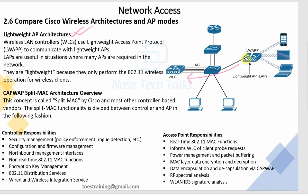Autonomous AP has remote management functionality - you can access it from a remote location using your credentials. With Lightweight AP, local management is possible as well. The key difference is that Lightweight AP is connected through the WLC infrastructure, while Autonomous AP is always connected directly to the cloud dashboard.